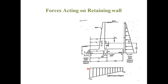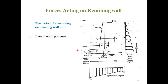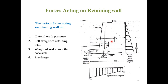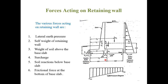Forces acting on a retaining wall — you can see in the picture. The main force is the lateral force. There is active earth pressure acting on the retaining wall, and passive earth pressure acting on the retaining wall. Other forces include the self-weight of the retaining wall, weight of soil above the base slab, surcharge load, soil reaction below the base slab, and friction force at the top and bottom of the base slab.